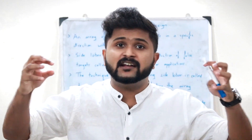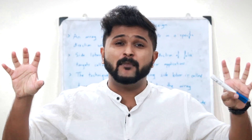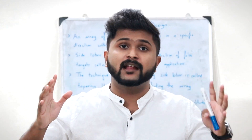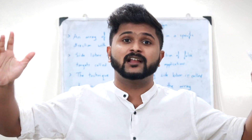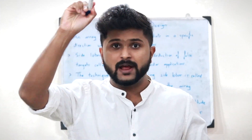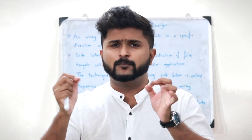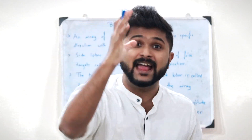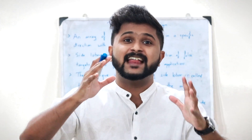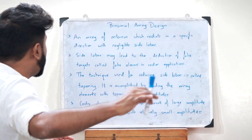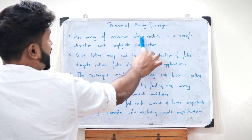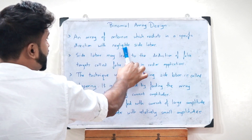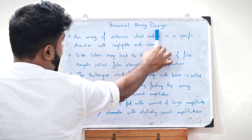An array of antennas is said to be a binomial array if it radiates with a negligible amount of side lobes. When we plot the radiation pattern or lobe diagram, it has a major lobe in the direction of propagation and minor lobes in unintended directions. A binomial array radiates in a specific direction with negligible side lobes.